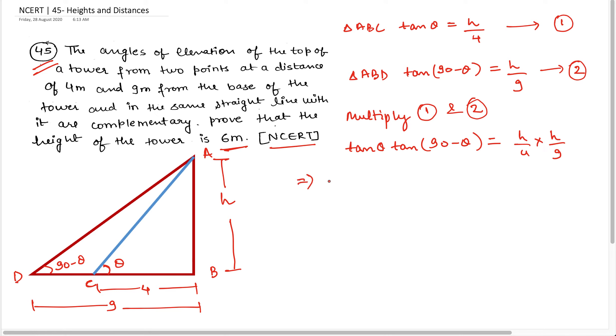So what will happen? tan theta multiplied by tan 90 minus theta is equal to cot theta, and this is h square upon 36.